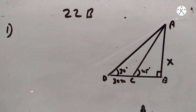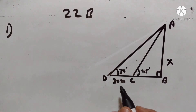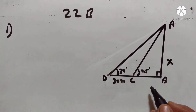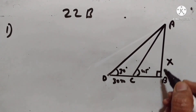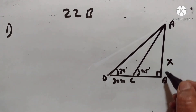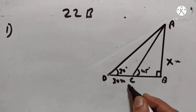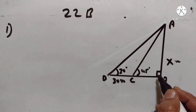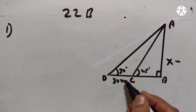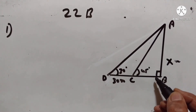Hello students, welcome to my channel Easy is the Math. Let's go to exercise 22b, first problem. In this figure, it is given that AB is perpendicular to BD and is of length x meters, DC is equal to 30 meters, angle ADB is equal to 30 degrees and angle ACB is equal to 45 degrees.